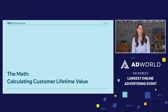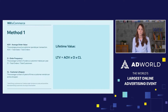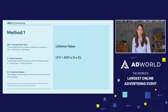There are multiple methods for calculating customer lifetime value, and I'll touch on a couple of them today. Ultimately, you'll have to do the homework and figure out what works for you and your business. So let's start with the first method, the most basic method. In this method, lifetime value equals average order value multiplied by order frequency multiplied by customer lifespan.